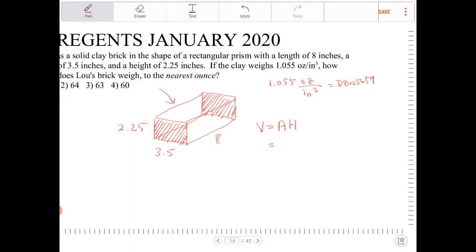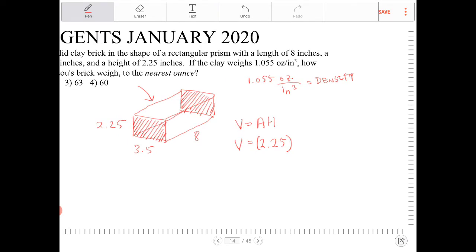This information may be a little bit of an overkill for this problem, but in future problems you may need to utilize this fact. So area of the base is 2.25 times 3.5 times the height, or the height in this case is our length. So that's our volume.